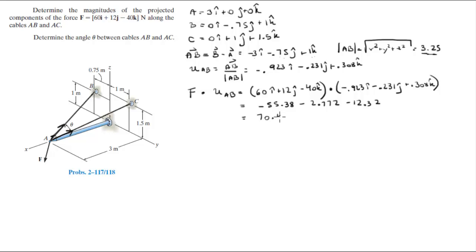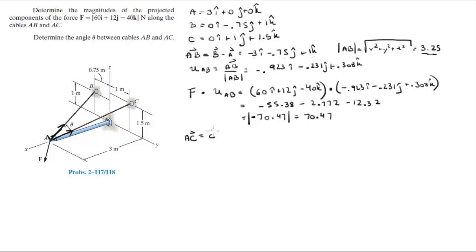Adding the three terms gives −70.47. Since they're asking for the magnitude, the magnitude is always positive, so the answer is 70.47. The negative sign means the force is actually directed from B to A, since we calculated the vector from A to B.